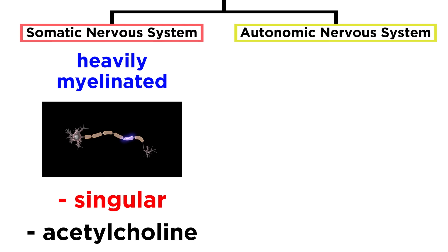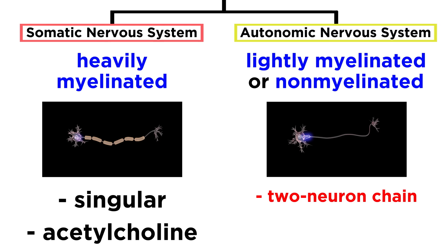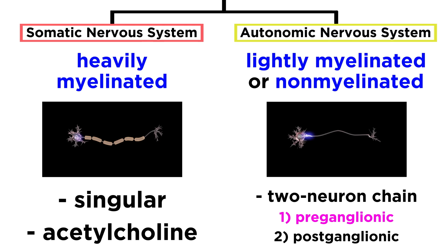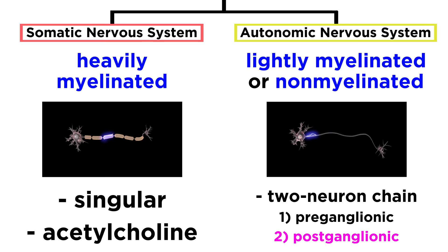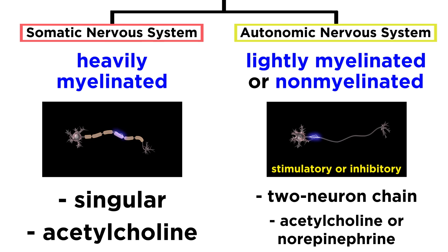For the autonomic, neurons are lightly myelinated or non-myelinated, and there will be a two-neuron chain from the central nervous system to effector organs. The first is the preganglionic neuron with its preganglionic axon, and the latter is the postganglionic neuron with its postganglionic axon. These release either acetylcholine or norepinephrine, resulting in either a stimulatory or inhibitory response, in contrast with somatic, which is always stimulatory.